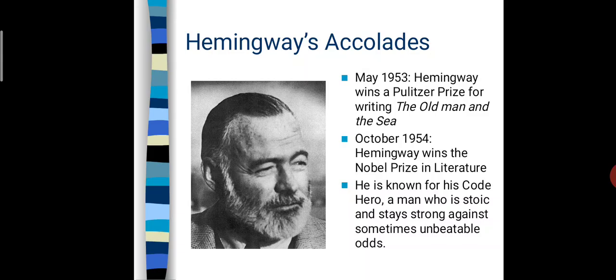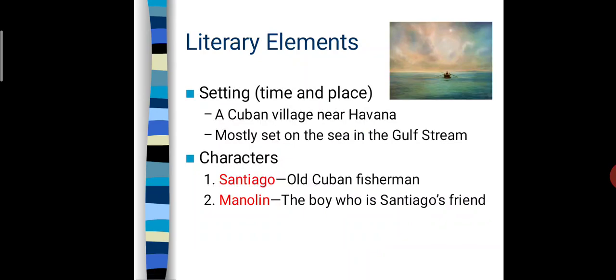In May 1953, Hemingway won the Pulitzer Prize for writing 'The Old Man and the Sea,' and in October 1954 he won the Nobel Prize in Literature. He is known for his concept of the 'code hero' — a man who is stoic and struggles, staying strong against sometimes unbeatable odds. In any calamity he is very strong, struggling, and never defeated by nature.